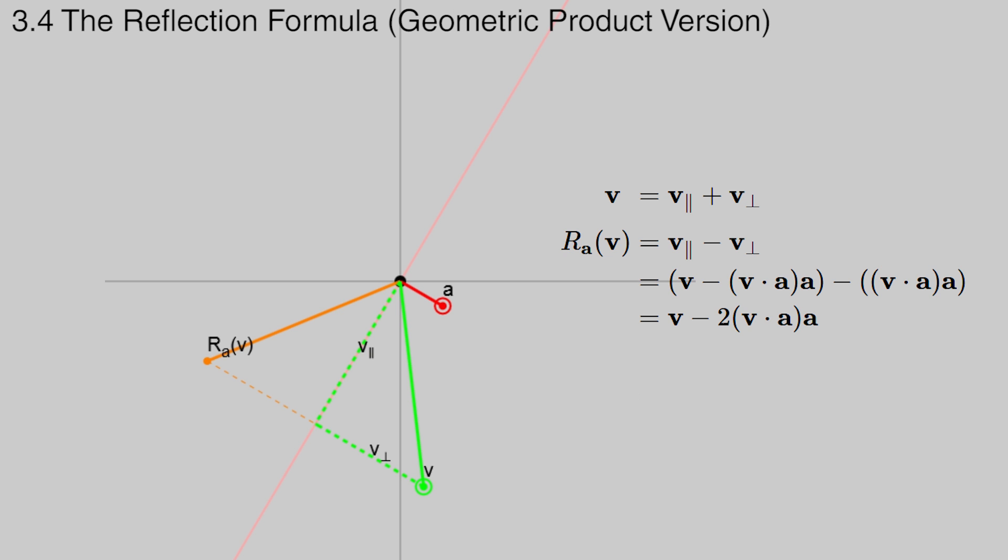At this point, we can replace the dot product by its geometric product version, to get the following. For this step, the geometric product of a with itself is just a dot product, since the exterior product is 0. This is saying the exact same thing, but in a different notation. Using a simple product notation, instead of a formula, to encode a fundamental operation, such as a reflection, is going to prove very useful.